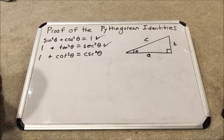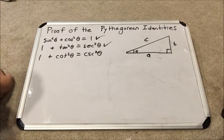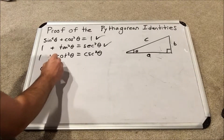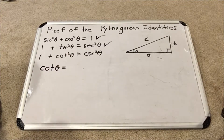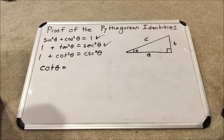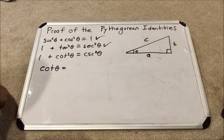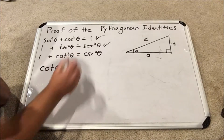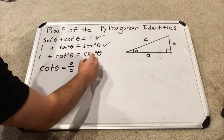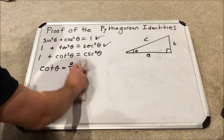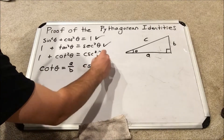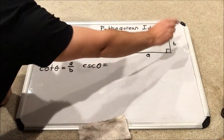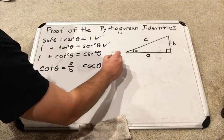Now for the last and final Pythagorean identity: 1 plus cotangent squared theta equals cosecant squared theta. As before, we'll make expressions for both trig functions. Cotangent theta equals the reciprocal of tangent theta, so it's adjacent over opposite, which is a over b. Cosecant theta equals the reciprocal of sine, so it's hypotenuse over opposite, which is c over b.